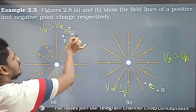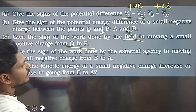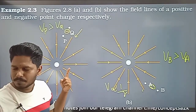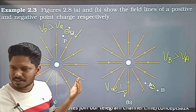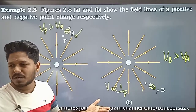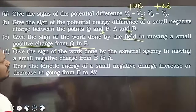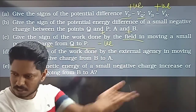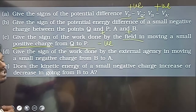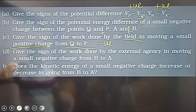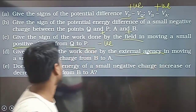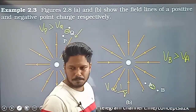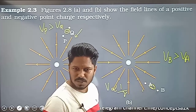Work done by the field in moving a small positive charge from Q to P — the field works. For the external agent, it would be negative (opposite to field work). Give the sign of work done by the external agent in moving a small negative charge from B to A — moving a negative charge, the external agent does positive work.